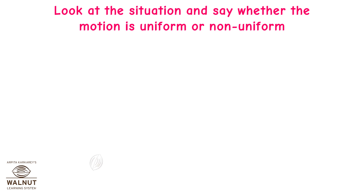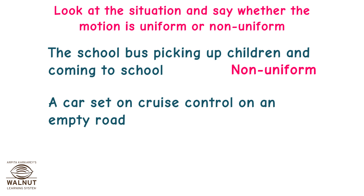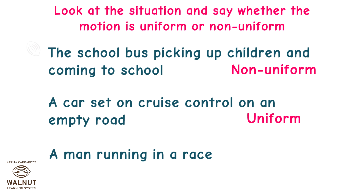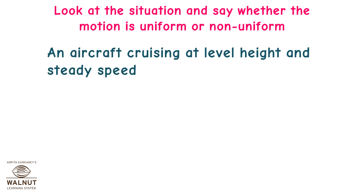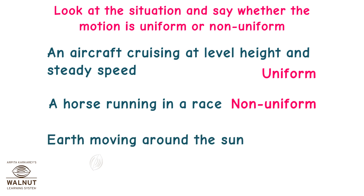Look at the situation and say whether the motion is uniform or non-uniform. The school bus picking up children and coming to school — Non-uniform. A car set on cruise control on an empty road — Uniform. A man running in a race — Non-uniform. An aircraft cruising at level height and steady speed — Uniform. A horse running in a race — Non-uniform. Earth moving around the sun — Uniform.